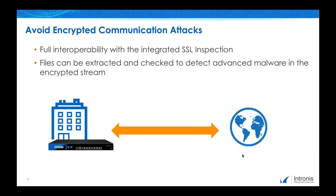How to avoid encrypted communication attacks: files delivered to networks by means of SSL-encrypted traffic can generate severe threats to your organization because they bypass traditional network security at the firewall, traveling through an encrypted tunnel. Barracuda Advanced Threat Protection is fully interoperable with the integrated SSL inspection. This ensures that you can identify and protect from advanced threats when they arrive at the firewall instead of when they arrive at the client.